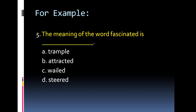Another type asks for direct word meanings from the chapters: 'The meaning of the word fascinated is?' with options: trample, attracted, wailed, and steered. The answer is 'attracted.' Seeing these question types, it's clear you need to go through the chapters in detail. Questions can be source-based, detail-based, or vocabulary-based — word meanings, antonyms, and Reference to Context questions are all included.